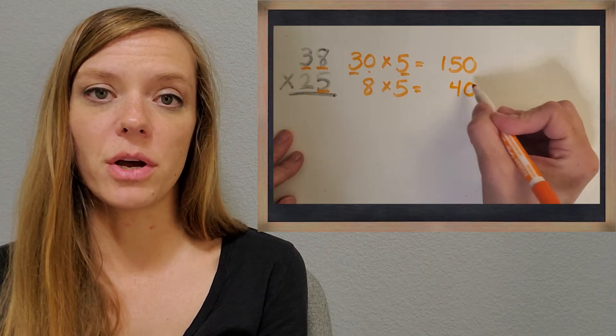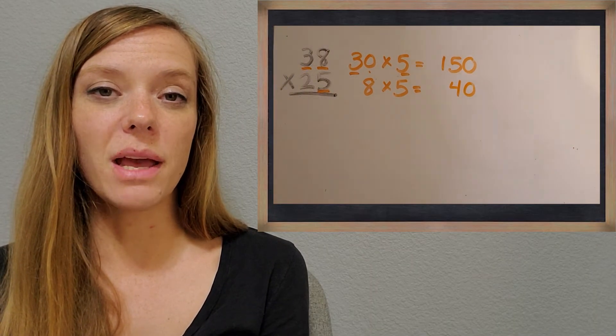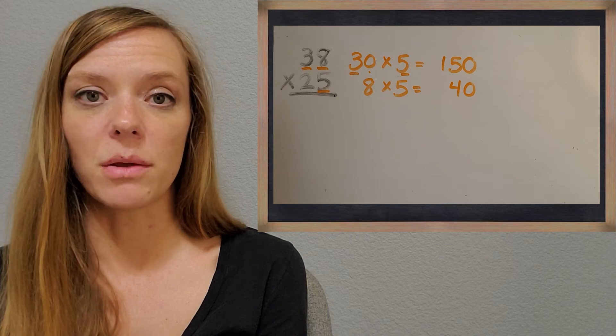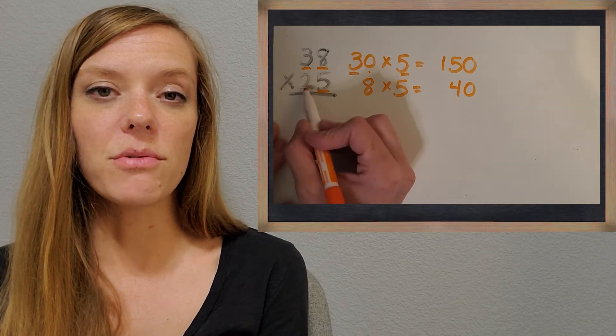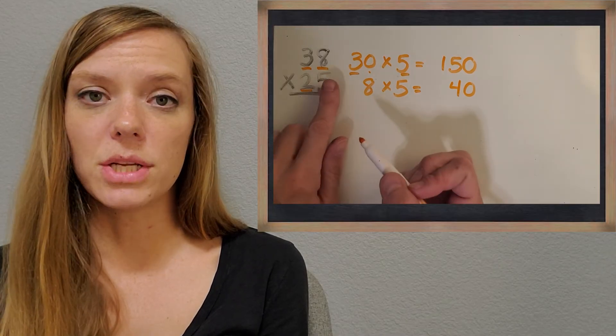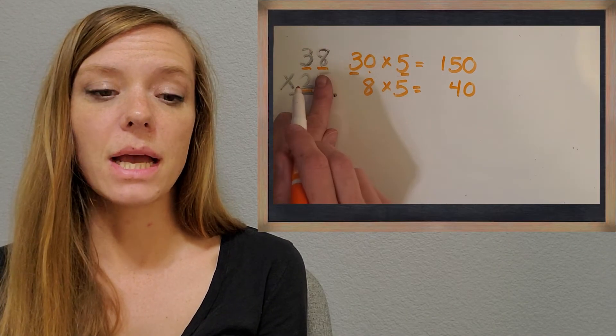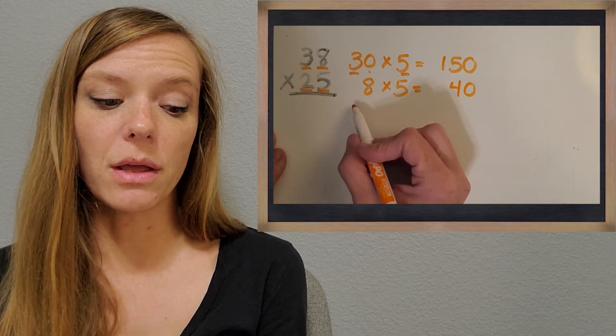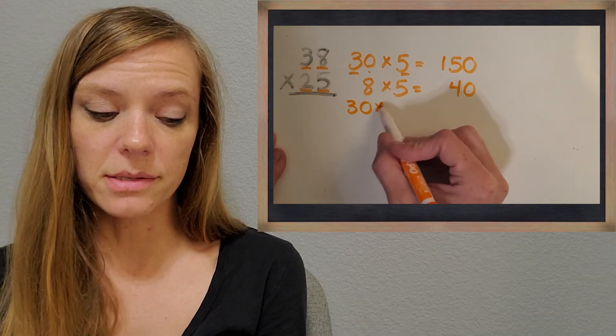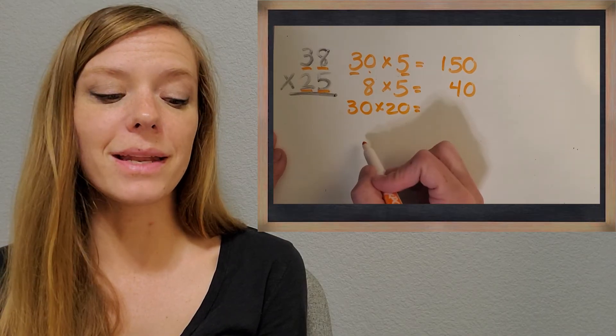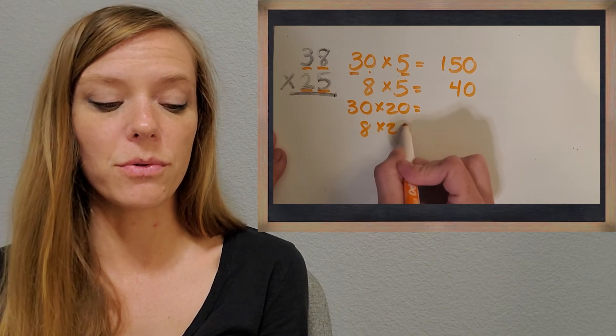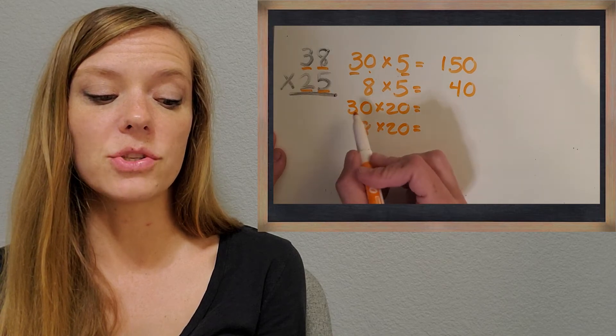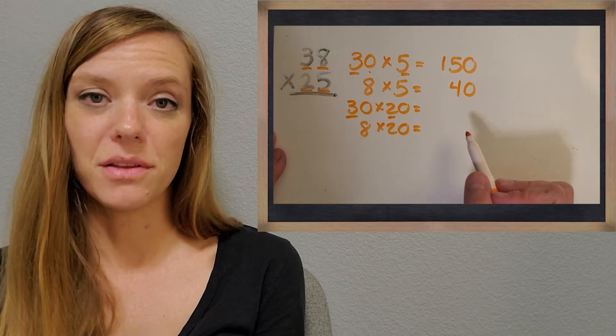So I'll write that partial product down too, but we better not add those up just yet, because we also have to think about the two in 25. What is that really worth? You got it. It's 20. So we're going to be doing both of the digits in 38 times 20 now. So we have two more partial products we need to figure out. So we're going to be doing 30 times 20 next. And then we're going to be doing that eight times 20. So let's get those both figured out. So for 30 times 20, I'm going to use that mental math strategy that I love. So let's do three times two. You got it. That's six.